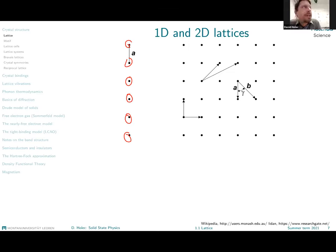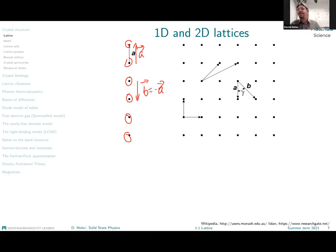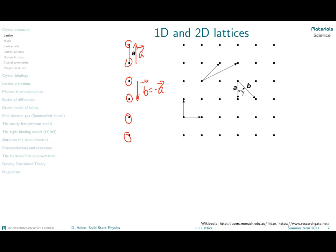I showed one choice, but can we choose another basis vector that defines exactly the same lattice? We can have a vector a going in one direction, or a vector b which is minus a — and that defines exactly the same lattice. So we really just have these two options. That's the beauty of the 1D lattice.